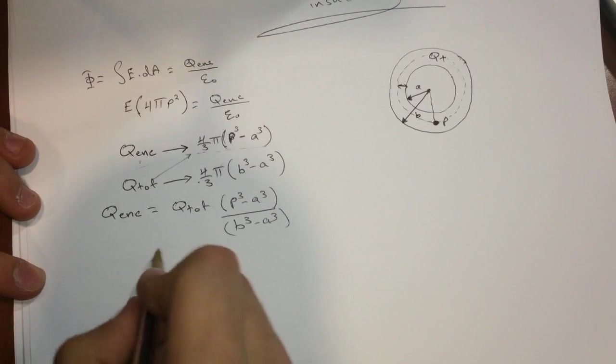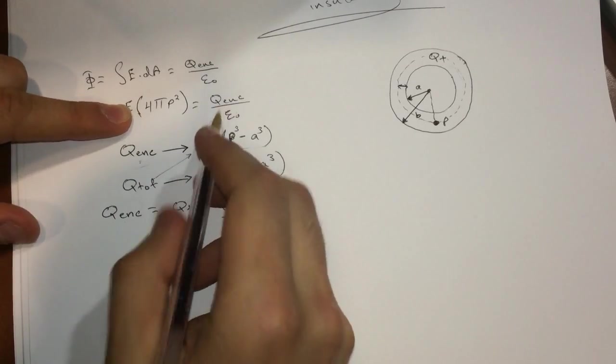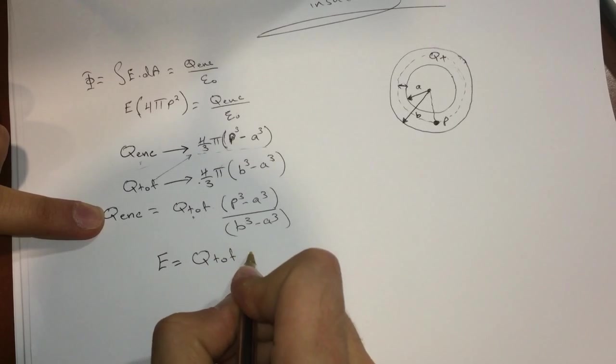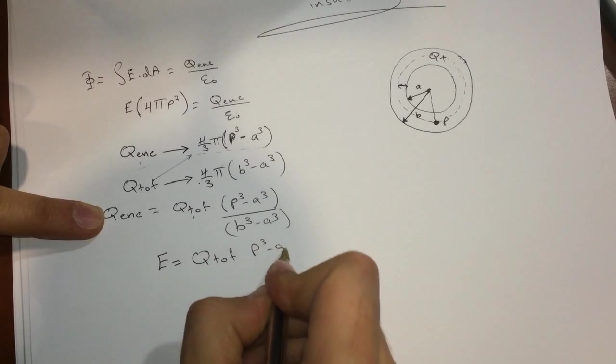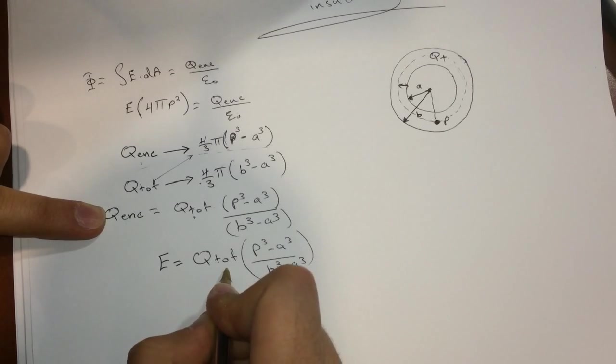So now let's put up the whole thing. E will be equal to, so now we can divide this by this, and then the Q enclosed was Q total P³ minus A³ divided by P³ minus A³, alright.